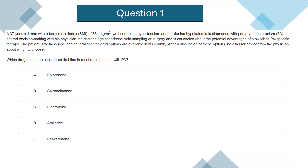We have a 37-year-old man with a high BMI of 33.4 kg per meter squared. He has well-controlled hypertension and borderline hypokalemia. He is diagnosed with primary aldosteronism. In shared decision making with his physician, he decides against adrenal vein sampling or surgery and is counselled about the potential advantages of switching to primary aldosteronism-specific therapy. Which of the following drugs should be considered first-line in most male patients with primary aldosteronism?